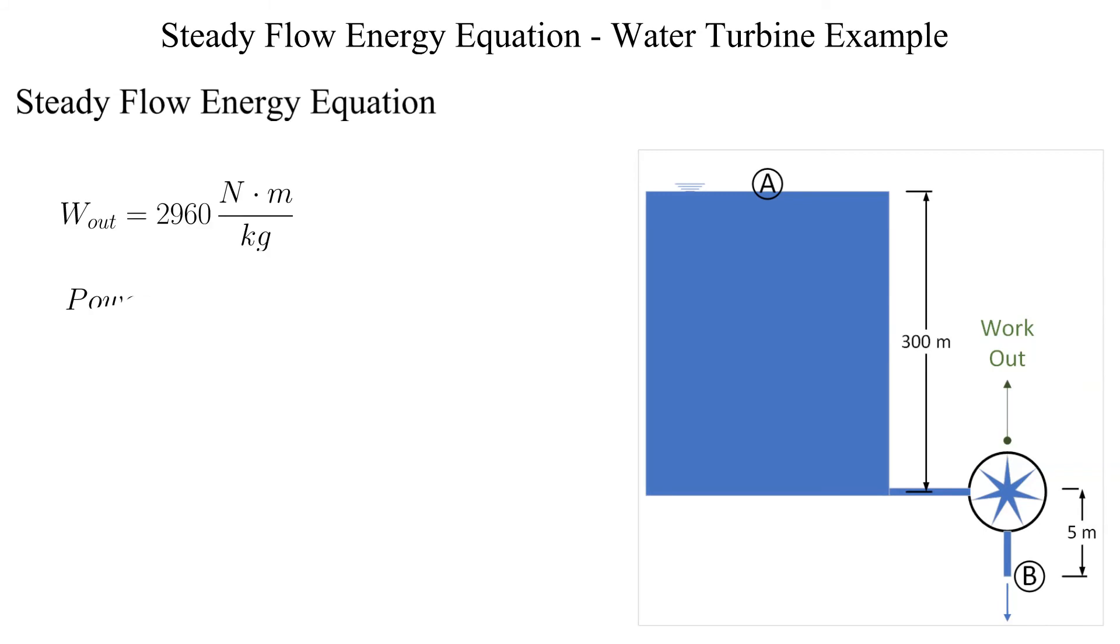Now that we have the specific work out, we can multiply it by the provided mass flow rate to get the power. The maximum power output is 1776 kilowatts.